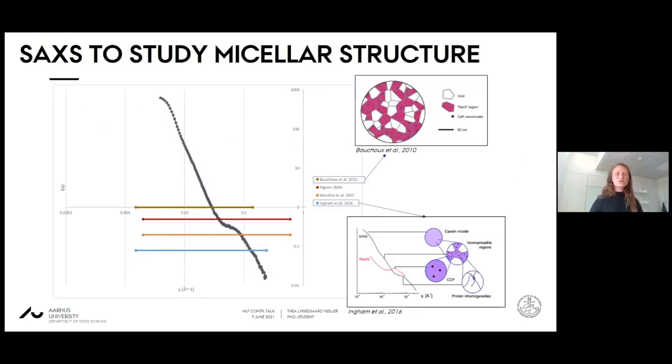We have chosen small angle x-ray scattering to study the micellar structure because it has previously been proven to be a quite useful tool to study the total structure of the micelle. What is shown here is a typical scattering profile of a casein micelle. We have three main scattering features: the low-Q scattering plateau, the intermediate region with a small bump or shoulder, and the more pronounced high-Q shoulder.